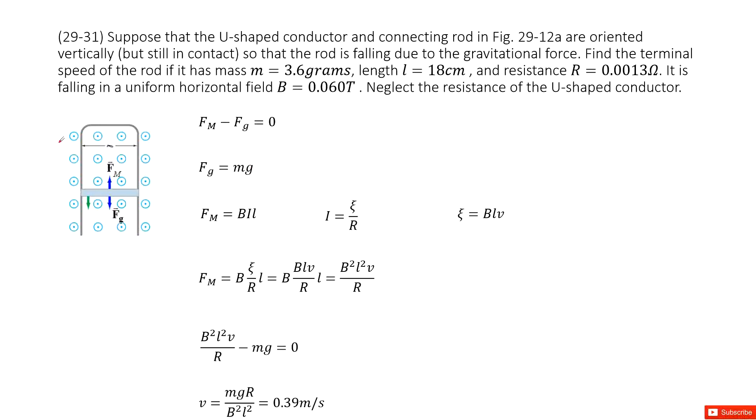Now we look at this system. We have a U-shaped conductor and connecting with a bar. We can see this bar and conductor is placed vertically, and the bar is falling due to the gravity force.